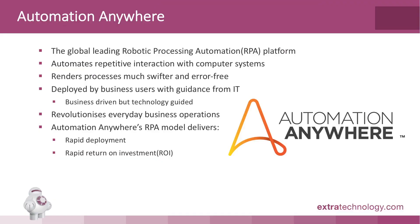Automation Anywhere is the leading robotic process automation platform. It specializes in revolutionizing day-to-day business operations by automating manual interaction with computer systems, rendering them much faster and virtually error-free. It differs from previous automation technologies in being deployed by business users themselves under the guidance and supervision of the IT function — we would describe it as business driven but technology guided. This characteristic is key to the rapid deployment and return on investment customers typically experience.